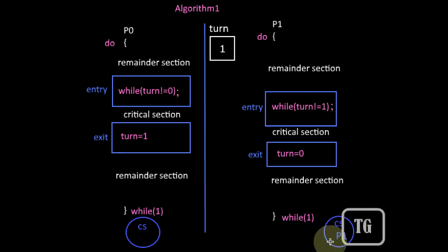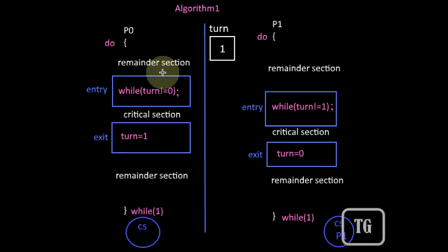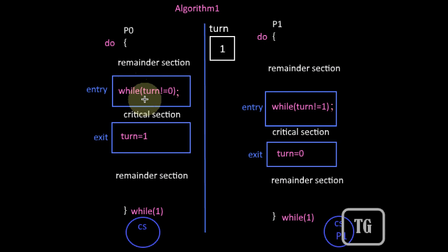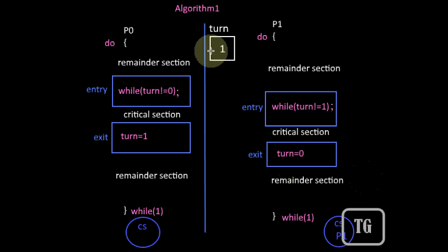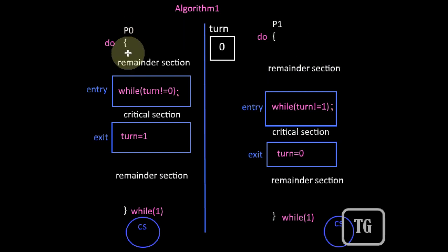Now only P1 is inside the critical section. If P0 wishes to enter the critical section, it finds the value of turn is not equal to 0 and will keep on waiting in the while loop. After P1 completes the critical section, in its exit section it will change the value of turn back to 0, giving the next chance to P0. Then P0 can execute, then P1 again, and so on — hence it works in a strictly alternating manner between the two processes.